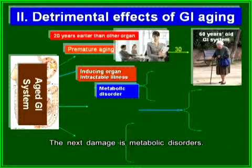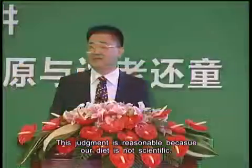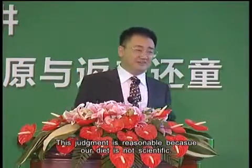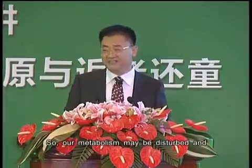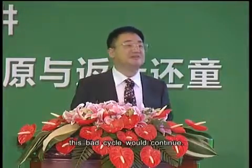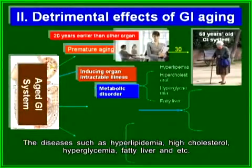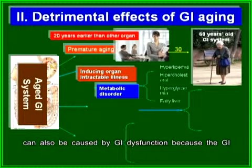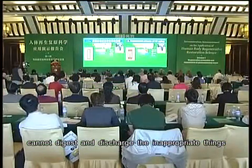The next damage is metabolic disorder. Many people may be suffering from metabolic disorders because our diet is not scientific and our GIs are not young, so metabolism may be disrupted in a bad cycle. Diseases such as hyperlipidemia, high cholesterol, hyperglycemia, and fatty liver can be caused by GI dysfunction, because the GI cannot digest and discharge inappropriate substances.